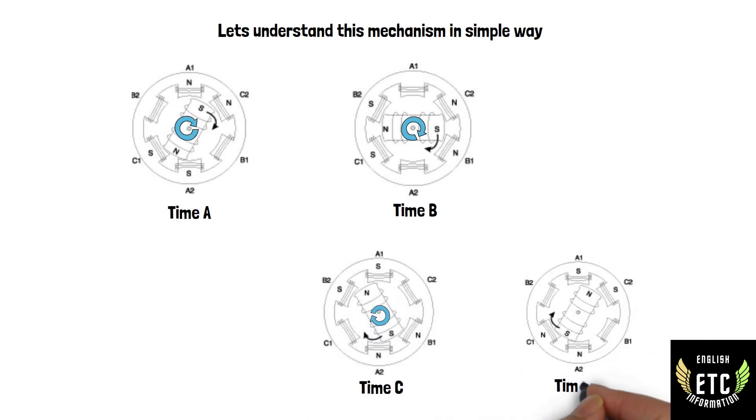As it is changed, the opposite poles on the stator attract the poles of the rotor. Thus, the stator's magnetic field rotates. The rotor is forced to rotate with it.